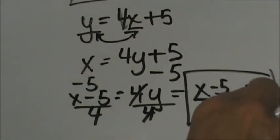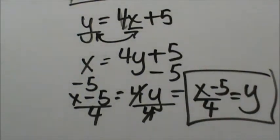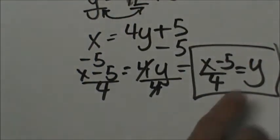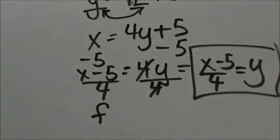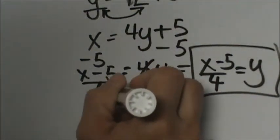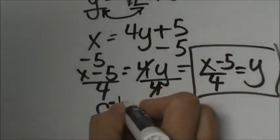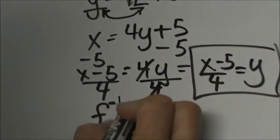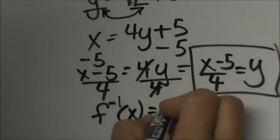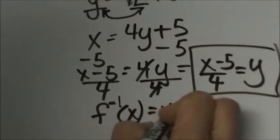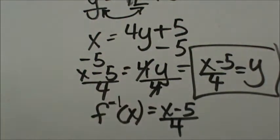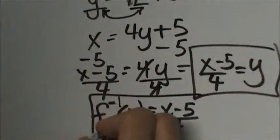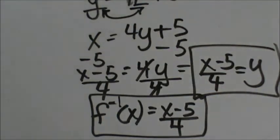Now we're going to replace this y with a different notation to show that it's the inverse. We're going to write f, but it's not the f(x) function — it's inverse. So we're going to use the notation f to the negative 1. That notates it as an inverse function, and it's going to be f⁻¹(x) equals x minus 5 over 4. That is how we write our final answer.